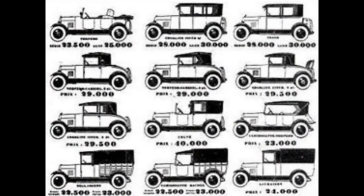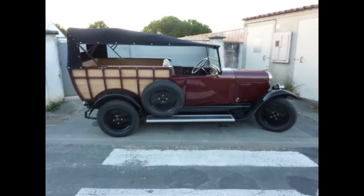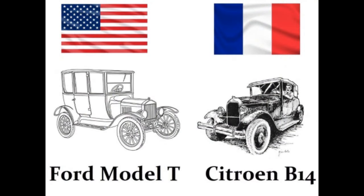The B14 was offered in seven body styles, with the Normandy being the utility model. The car proved to be successful, with almost 128,000 units being sold in its three-year model run. The Citroën B14 was to France what the Model T Ford was to the United States.